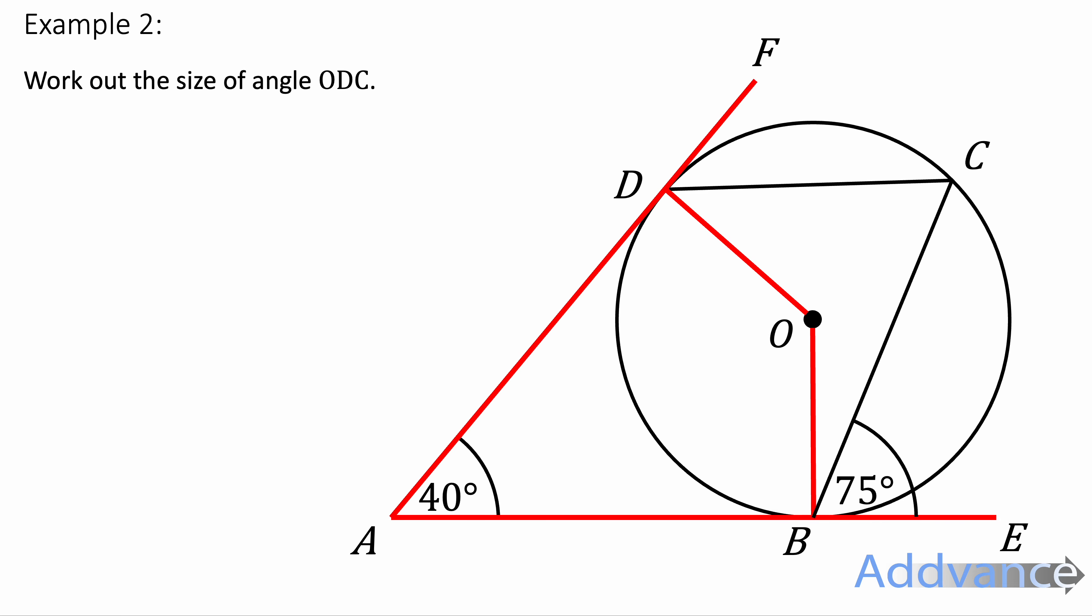Now, O, D, C is this angle here. I've also highlighted these sides in red, which are tangents next to radiuses, which make 90 degree angles because the angle between a tangent and a radius is always 90 degrees.